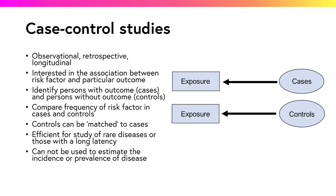Case control studies are efficient for the study of rare diseases or those of a long latency, and require comparatively fewer subjects than cohort studies, making them relatively inexpensive compared to most other designs. The association between multiple risk factors and a single outcome is examined, but the prevalence or incidence of the outcome cannot be estimated using this design. They are also limited in the extent to which temporal relationships can be established, due to the difficulty in ensuring exposure occurs before outcome.